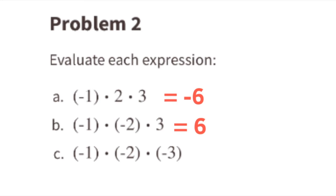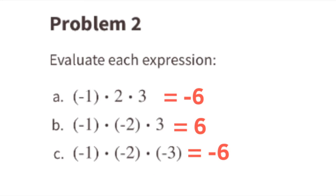Part C: negative 1 times negative 2 times negative 3. We can do negative 2 times negative 3 to get positive 6. Then we multiply negative 1 times positive 6, which equals negative 6. The value for this expression is negative 6.